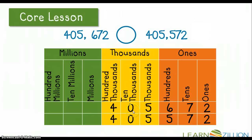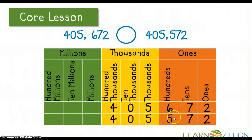I'm going to jump to the ten thousands place — both of these numbers are the same, there are 0 ten thousands in each number, so they're still equal. Then I jump to the thousands place and again each number has a 5 in the thousands place. My next jump is to the hundreds place and here I'm noticing my first difference. I notice that 405,672 has a 6 in the hundreds place, whereas 405,572 has a 5 in the hundreds place. I know that 6 is a larger number than 5, so the number on top is going to be greater than the number on the bottom.